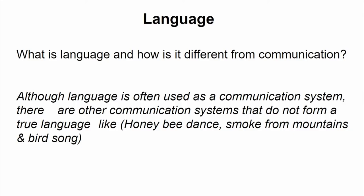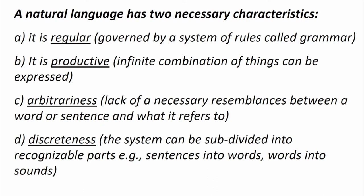Basically, language is often used as a communication system, but there are other communication systems — honey bee dances, smoke from mountains, bird songs — which are not true languages. A natural language has to have four properties. First, a natural language is regular, meaning it is governed by certain rules called grammar, which tell the language what should be interpreted and what should not, and what the anomalies are. Also, a natural language is productive, which means it can produce infinite combinations — a number of communications and ideas. Changing some part of a language, a new idea is generated.